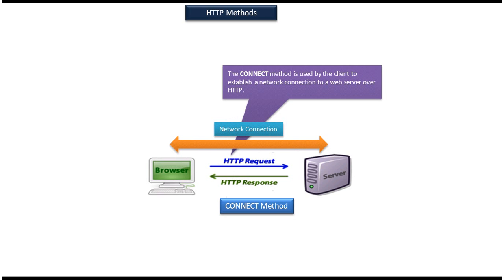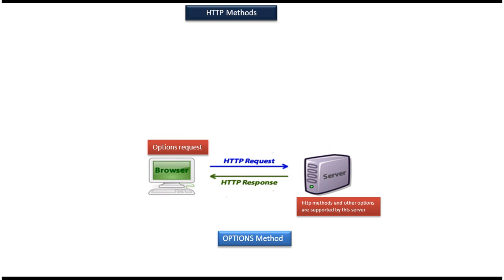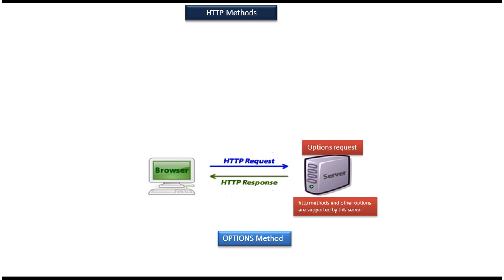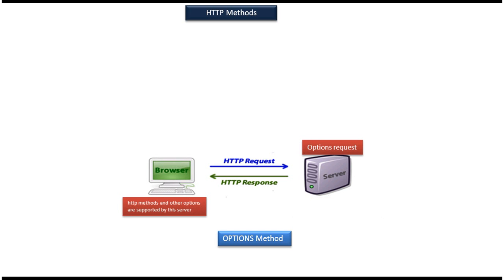Next we will see the OPTIONS method. Using the OPTIONS method we can find what are the different HTTP methods and other options supported by the server. The client sends an OPTIONS request to the server, and the server returns what HTTP methods and other options it supports back to the client.